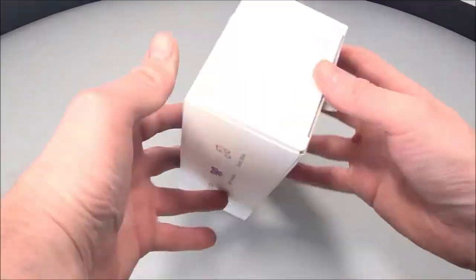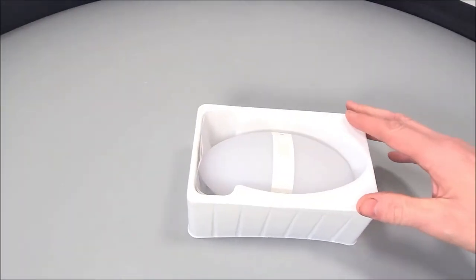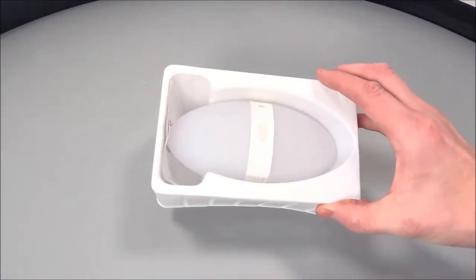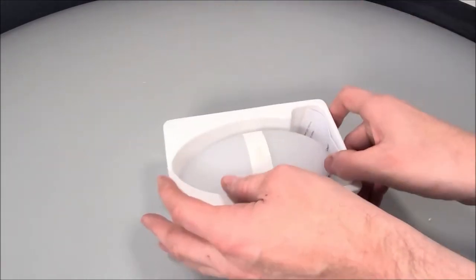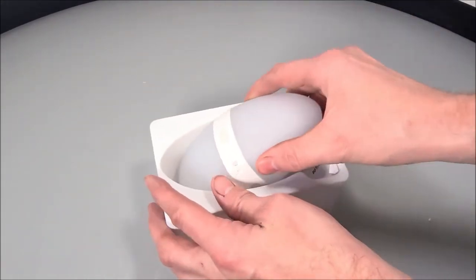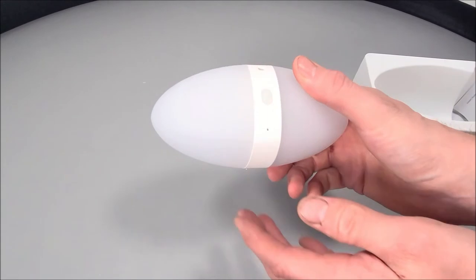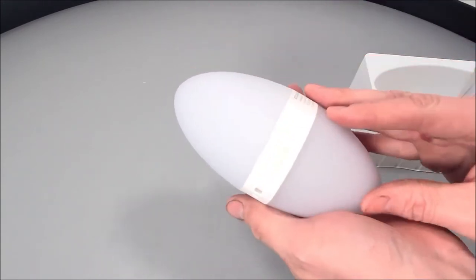Inside the box, the light itself comes placed securely within simple yet very protective packaging. The lamp, which we're going to call the egg, comes with two clear frosted sides.